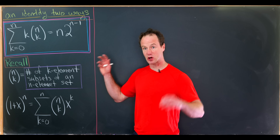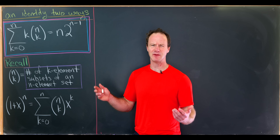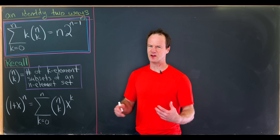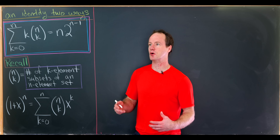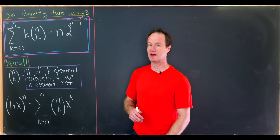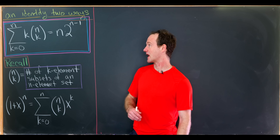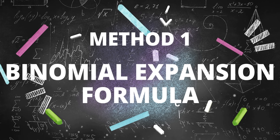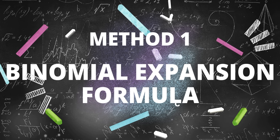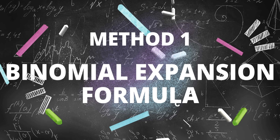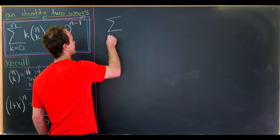Notice there's no closed form in sight here. What I mean by closed form is the formula that looks like n factorial over k factorial times n minus k factorial — we won't use that at all. So let's look at our first method, which uses the binomial expansion formula. Let's start with our left-hand side.